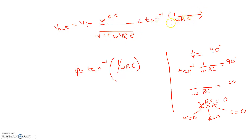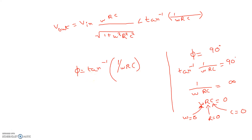Simplifying the magnitude term: V_out = V_in × ωRC / √(1 + ω²R²C²) ∠ tan⁻¹(1/ωRC). So the phase difference between input and output is φ = tan⁻¹(1/ωRC), meaning the output leads the input by this factor. If input is provided across the RC series combination and output is taken from the resistor, the output leads the input by φ = tan⁻¹(1/ωRC).